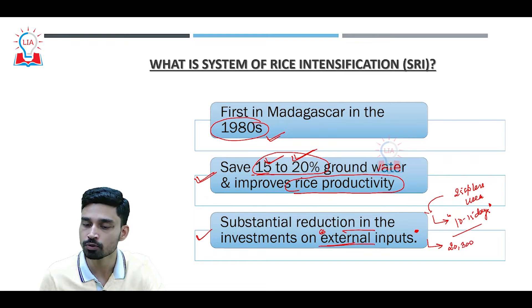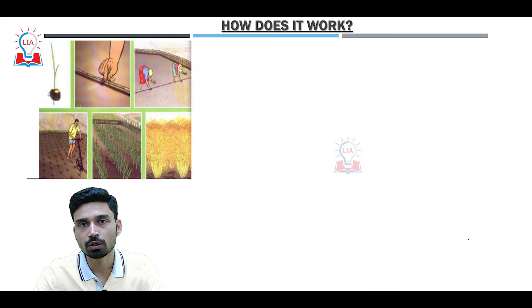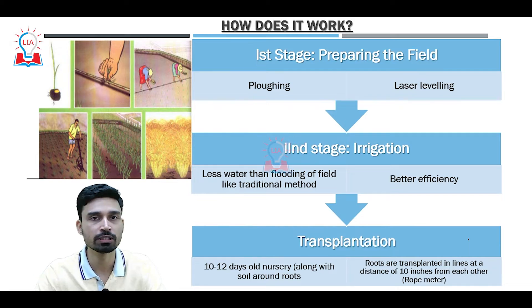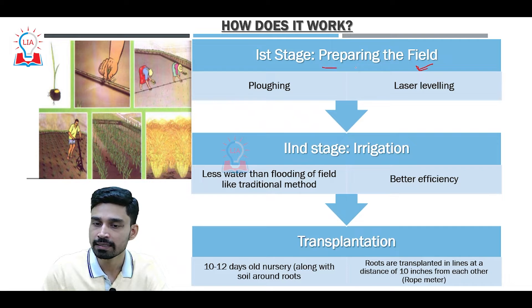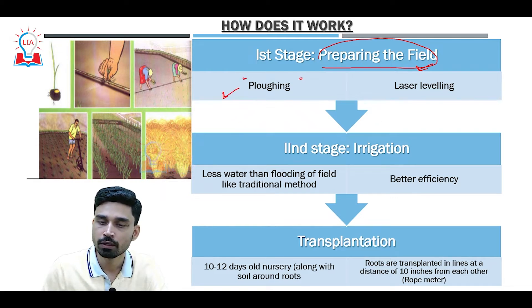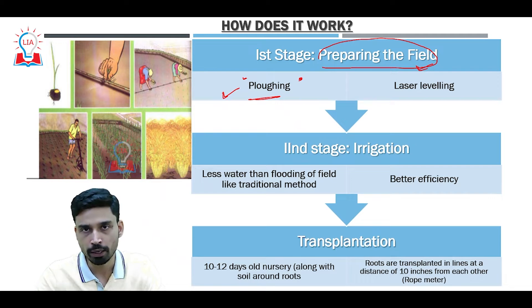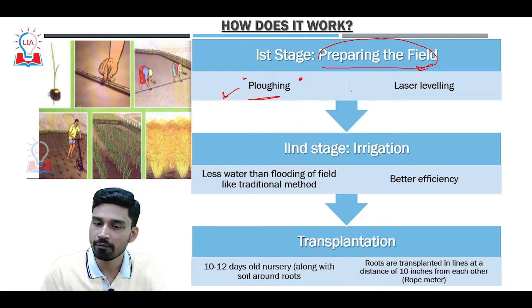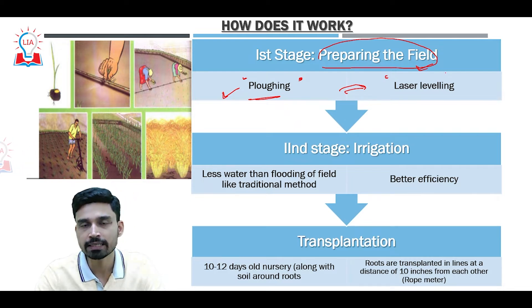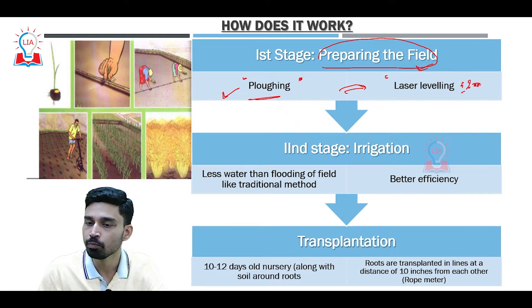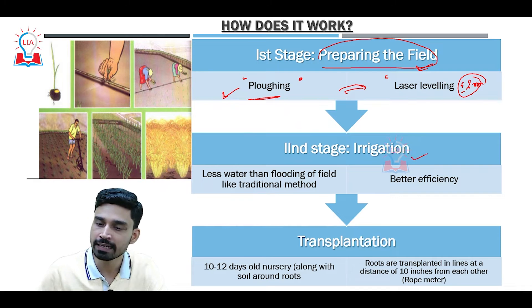The SRI system of cultivation can be understood by breaking the whole process into three stages. The first stage is preparation of the field, where plowing mixes the upper and lower soil layers and makes the soil softer. This is followed by laser leveling — a method using lasers to ensure uniformity in the soil level, maintained to plus or minus two millimeters.